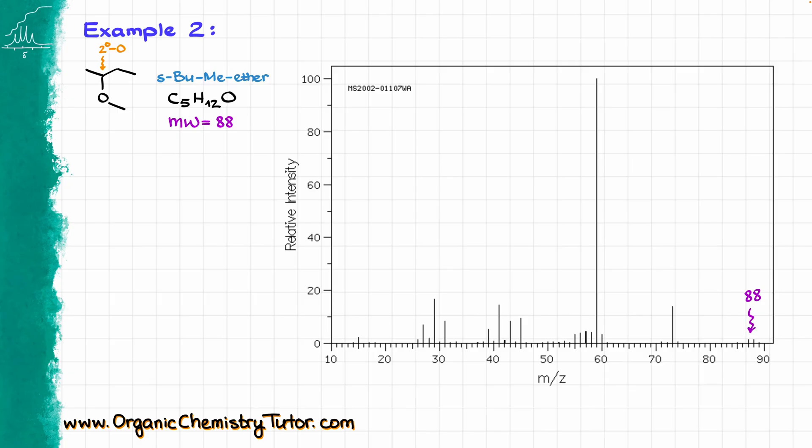The electron pairs that I have on my oxygen can potentially stabilize the carbocation, meaning that if I do a fragmentation over here, making the following resonance-stabilized carbocation with the molecular formula of C4H9O+, that guy is going to have the weight of 73, and we do have that one in the spectrum.